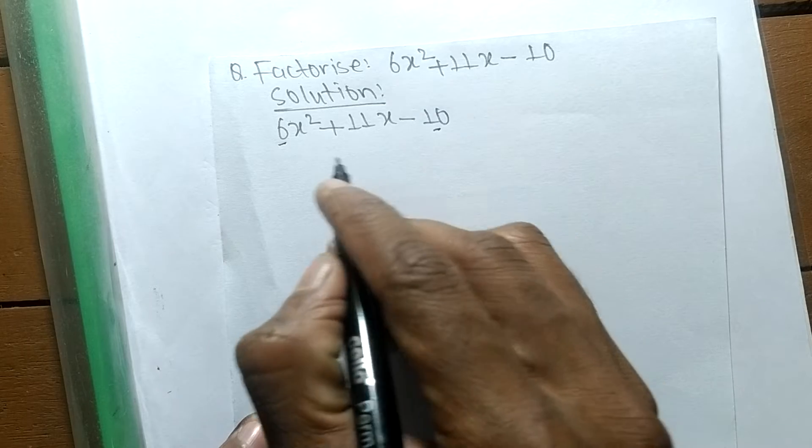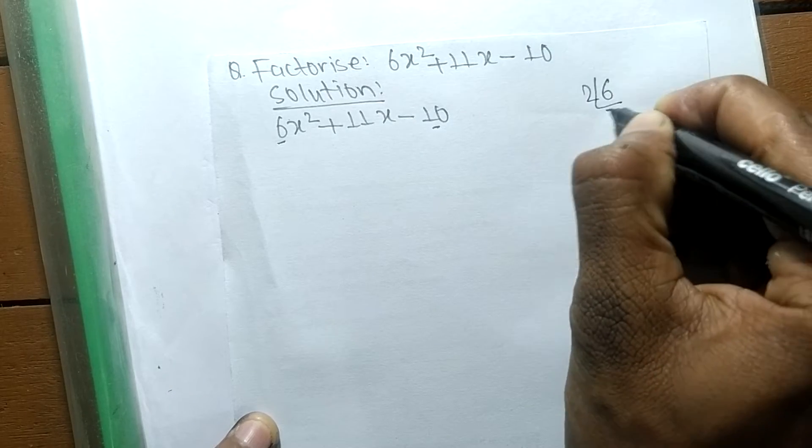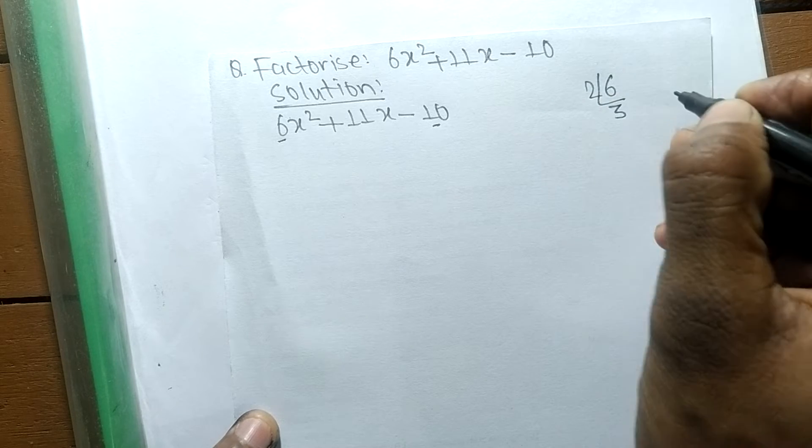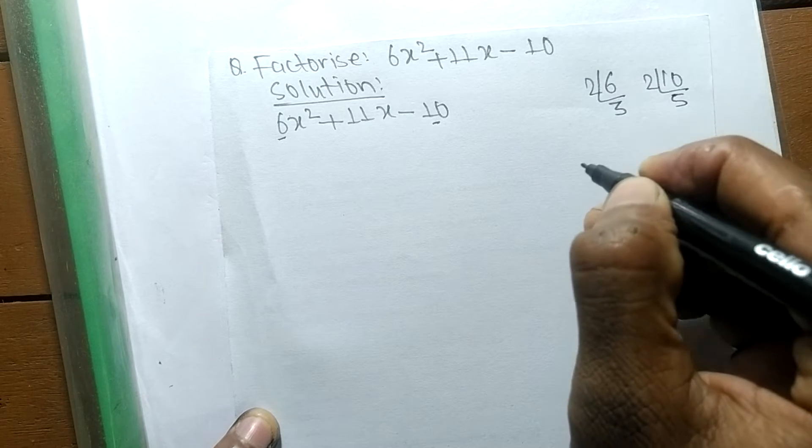So the prime factors of 6 is 2 × 3 = 6, and the prime factors of 10 is 2 × 5 = 10.